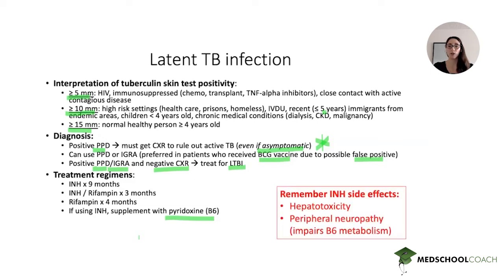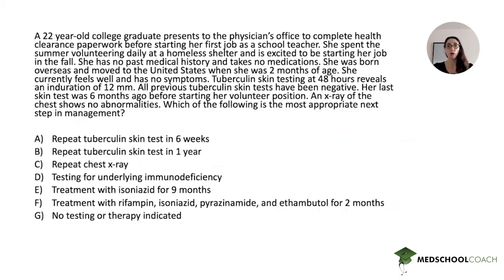The important toxicities of isoniazid to remember are hepatotoxicity — ranging from mild liver enzyme elevations to severe hepatotoxicity — and peripheral neuropathy, because isoniazid impairs pyridoxine (B6) metabolism. That is why we supplement with pyridoxine.